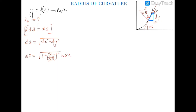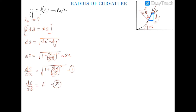We can write ds = √(1 + (dy/dx)²) · dx. Let's call this equation number one. We also know that ds/dθ = r, and this is equation number two.